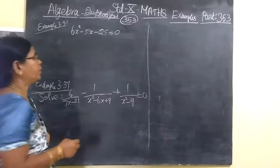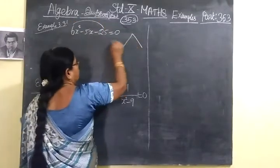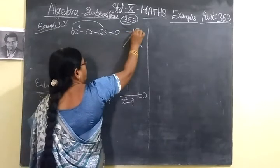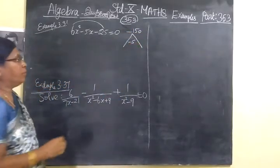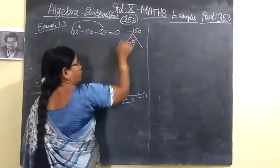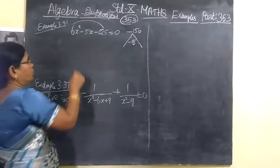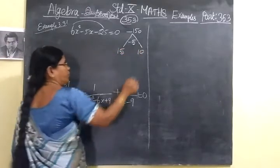This is 6x² - 5x - 25 = 0. So if you multiply, you get -150 and separate means -5. Definitely you have to take care of this sign, sign in the country power. It is not. So write 15, 10.